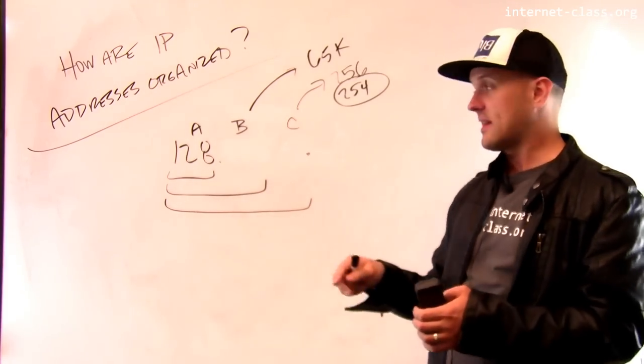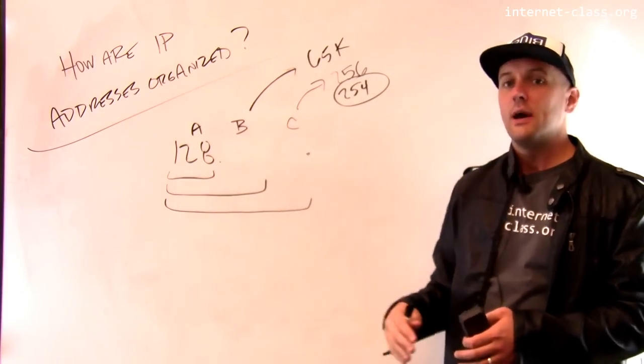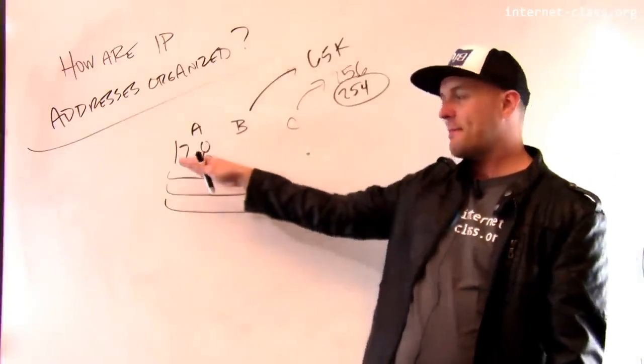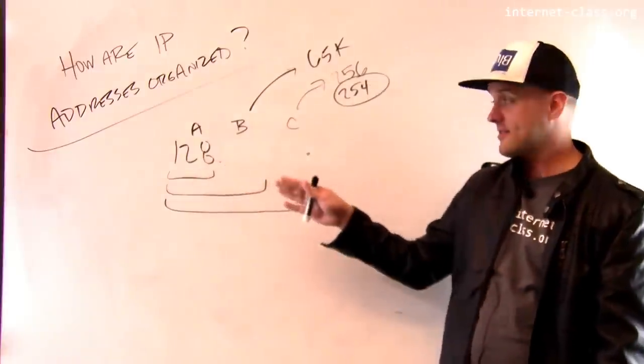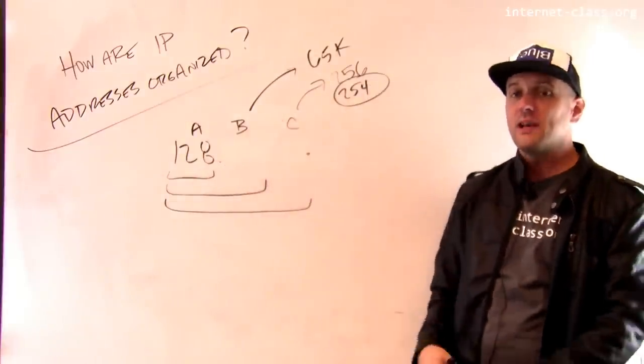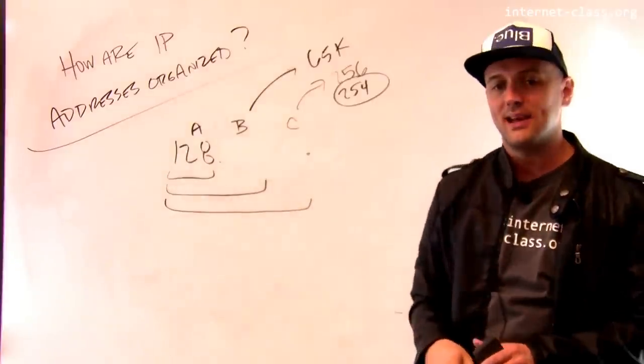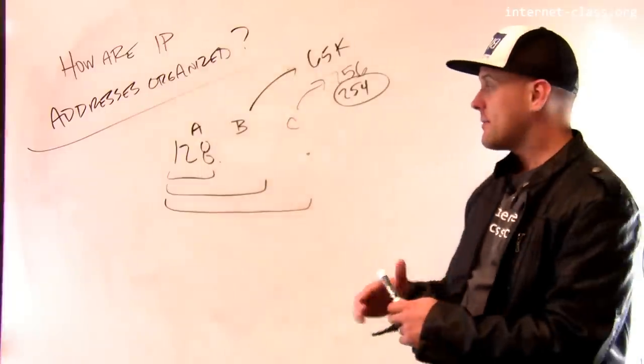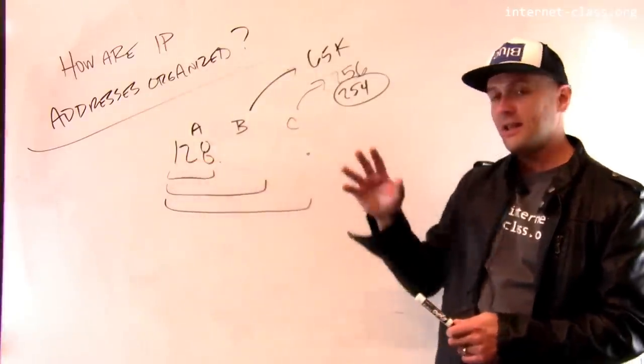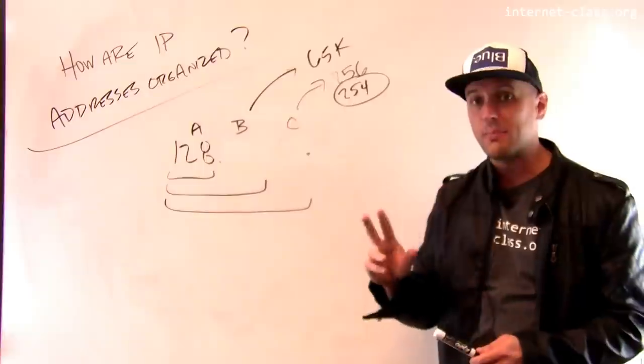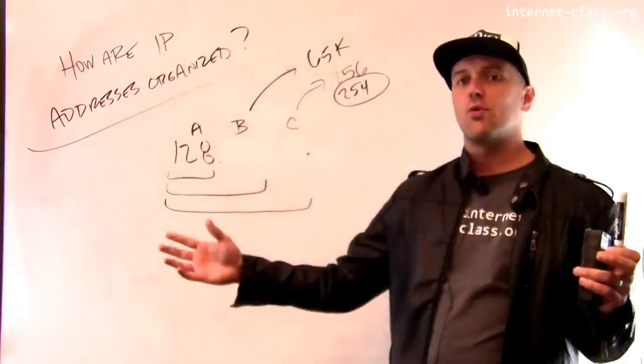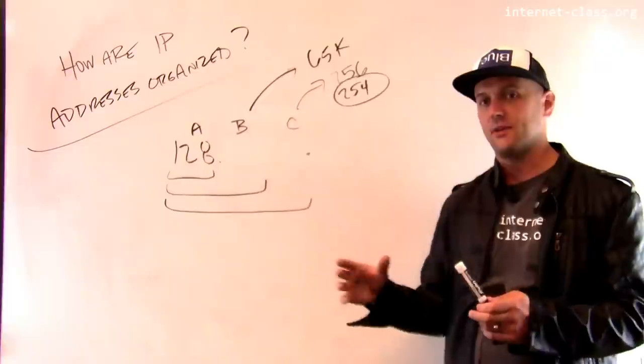And a lot of organizations actually got these class A networks, but they don't have enough machines to register on them. So I think MIT originally, and may still have, a class A network. So they have 16 million IP addresses that they can route to on the internet. That's a huge number. And if you think about it, if we divided up the internet into class A networks, there would only be 256 of them, and we know that there are many, many more autonomous systems that are operating out there in the world.